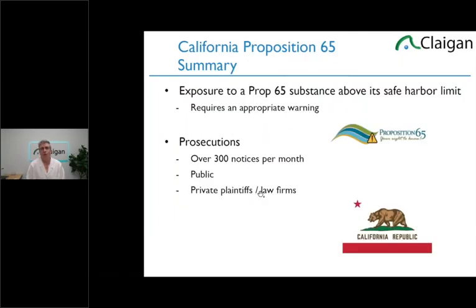One of the things about Prop 65 is if there's an exposure above the safe harbor limit for a chemical, the product requires an appropriate warning. What makes this different is a criminal environmental violation in California can be prosecuted in civil court by a civil plaintiff — usually a law firm representing some environmental fund in theory, but really a law firm. The law firm can claim not only penalties but also costs involved. Because of that, there are around 300 prosecutions a month. It is by far the most heavily prosecuted restricted materials legislation in the world.